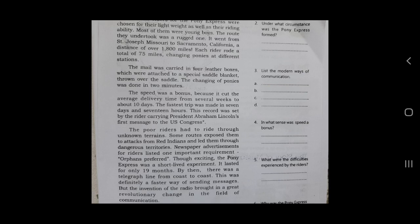The speed was a bonus because it cut the average delivery time from several weeks to about ten days. The fastest trip was made in seven days and seventeen hours — a record set by the rider carrying President Abraham Lincoln's first message to the US Congress. The poor riders had to ride through unknown terrains; some roads exposed them to attacks from Red Indians and led them through dangerous territories. A newspaper advertisement for riders listed one important requirement: 'Orphans preferred.' Though exciting, the Pony Express was a short-lived experiment, lasting only 19 months. By then, there was a telegraph line from coast to coast — a faster way of sending messages. The invention of the radio brought a great revolutionary change in the field of communication.